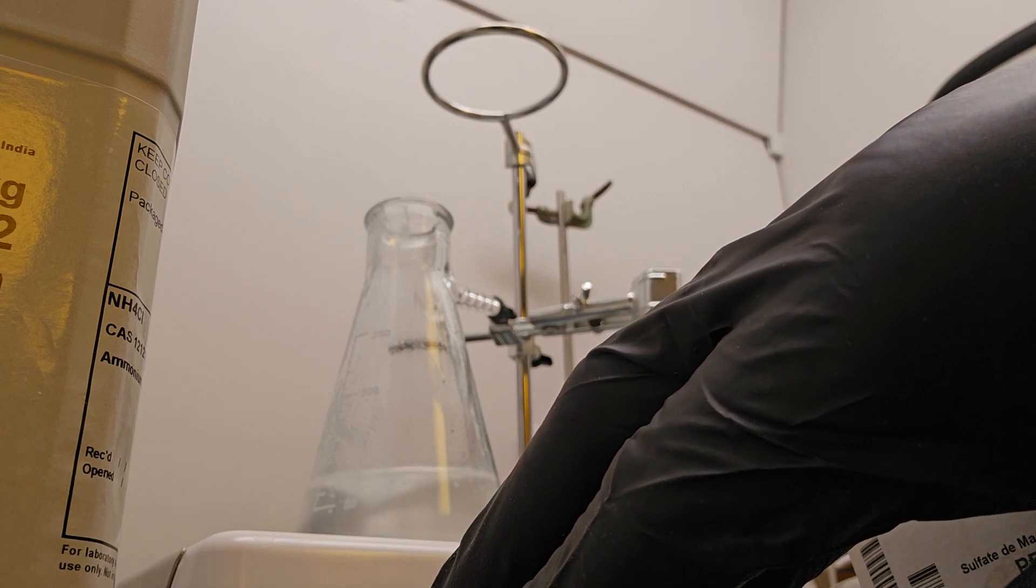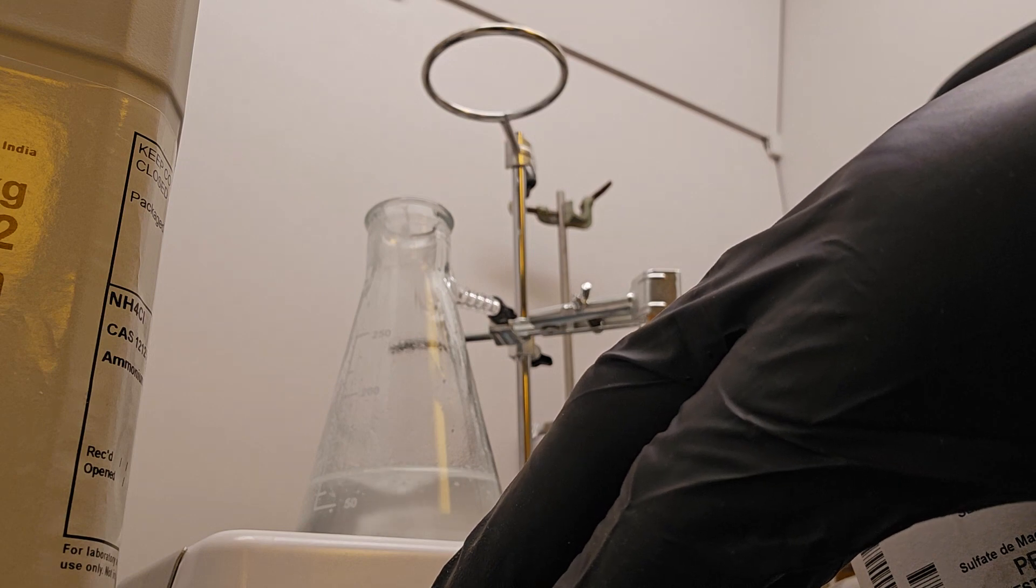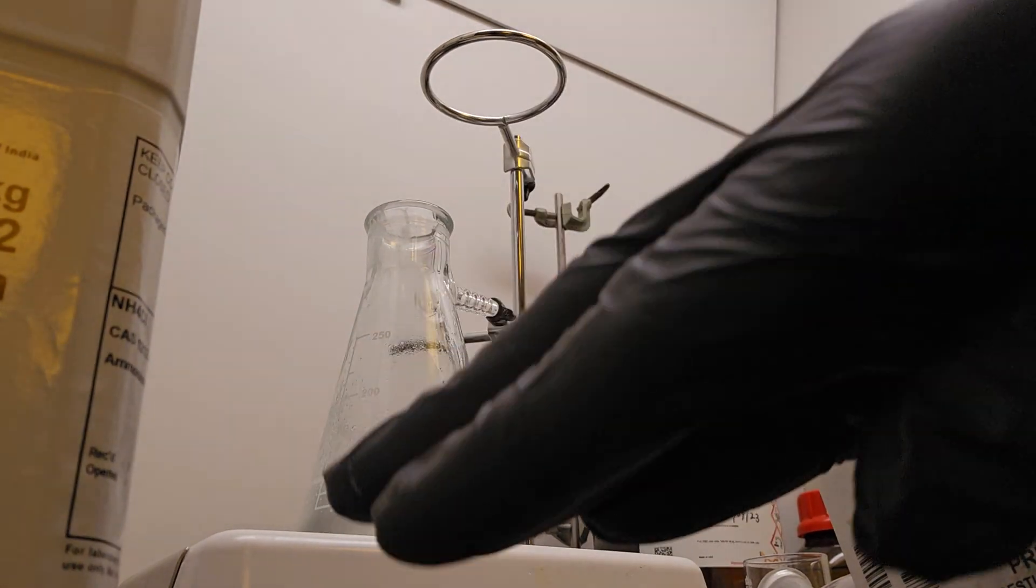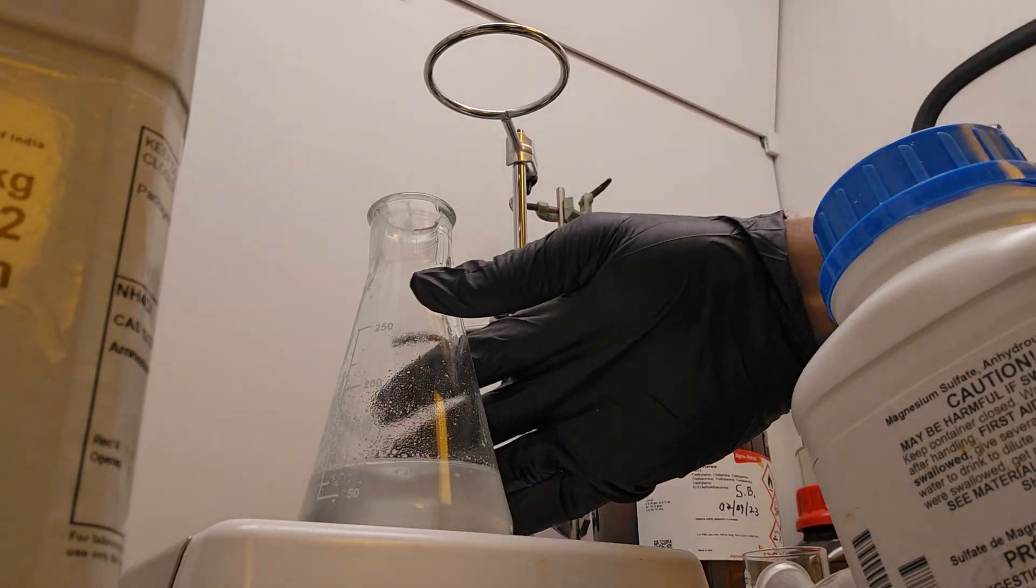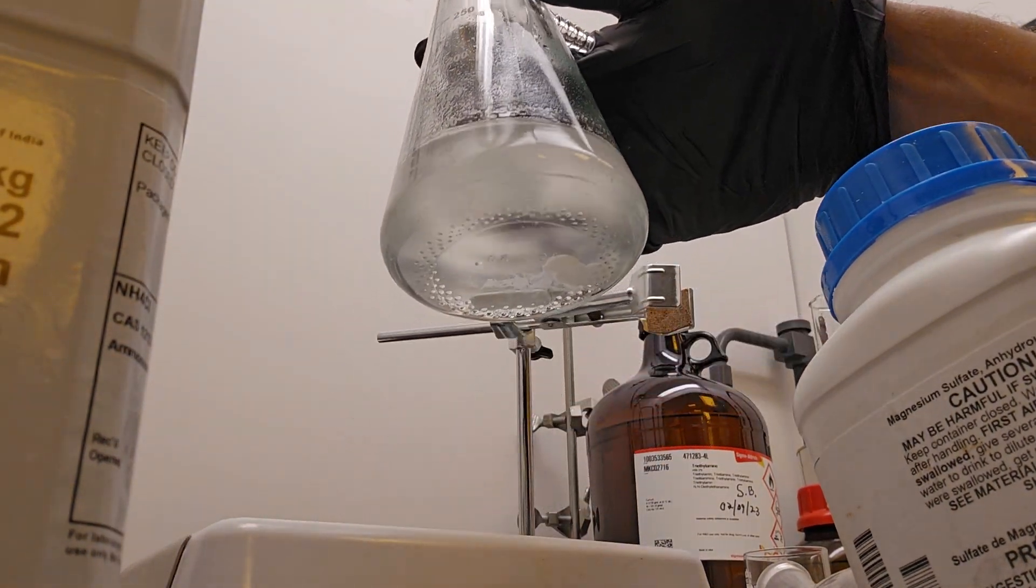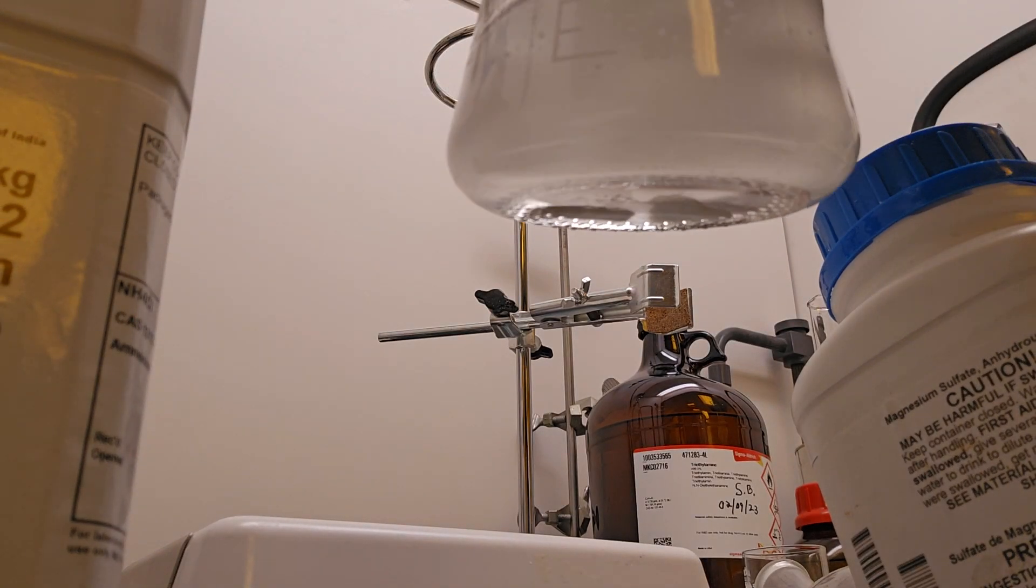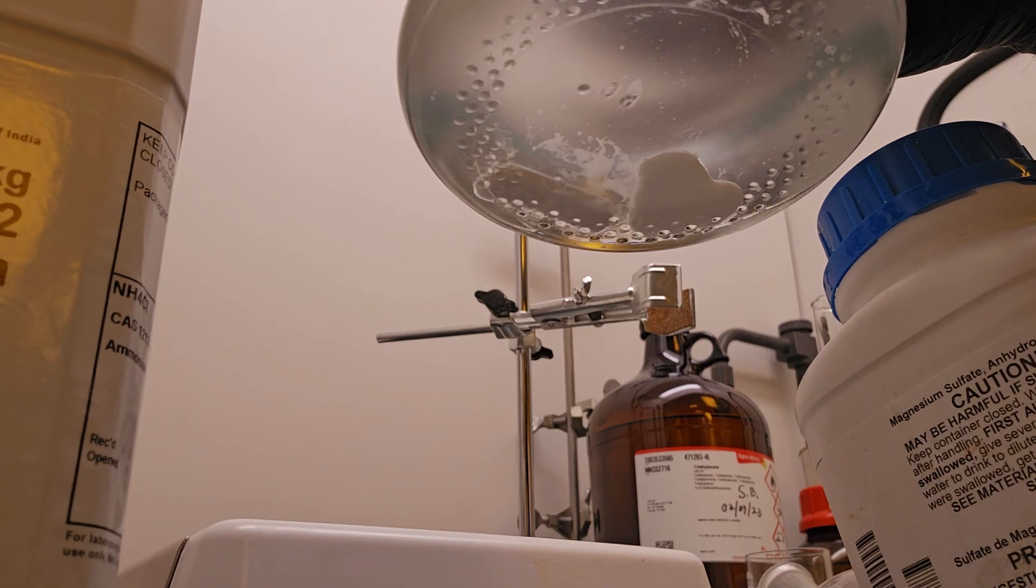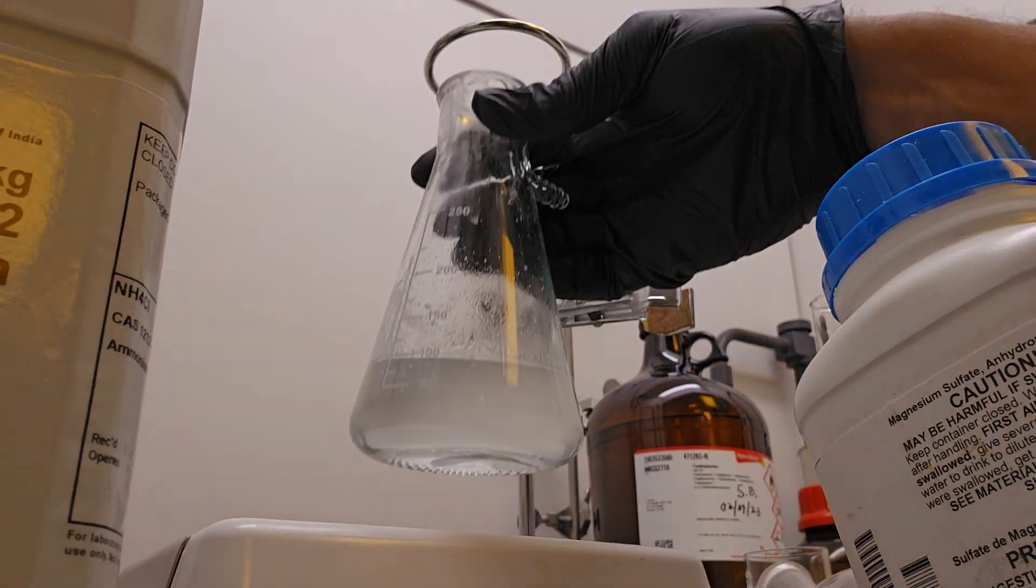Again, this is convenient because all we have to do now is filter out this clump. And so let me show you here so we can get a good view of that clump underneath it. The clump is next to the stir bar. So there you have it.